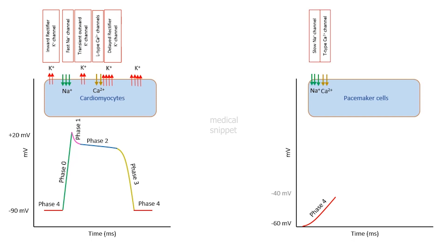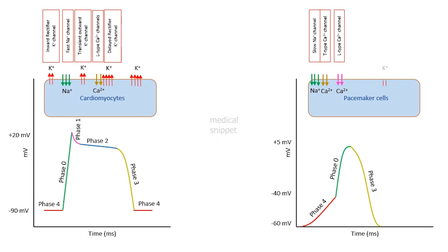When the membrane potential reaches minus 40 millivolts, there is rapid depolarization up to positive 5 millivolts. This phase is called phase 0. It is due to calcium influx by L-type calcium channels. Then there is repolarization of the pacemaker cells, referred to as phase 3. It is due to the efflux of potassium ions by the voltage-gated potassium channels.